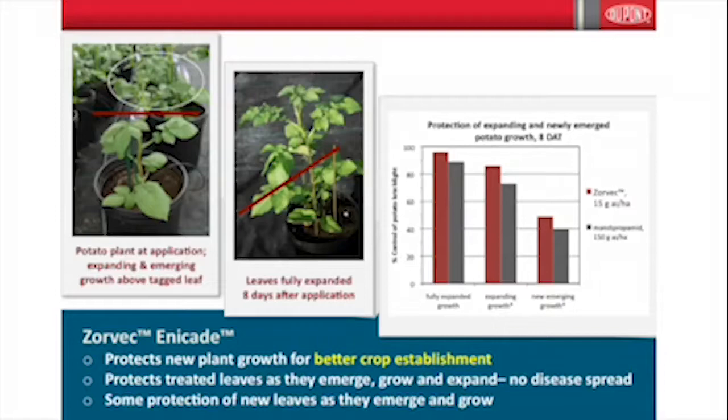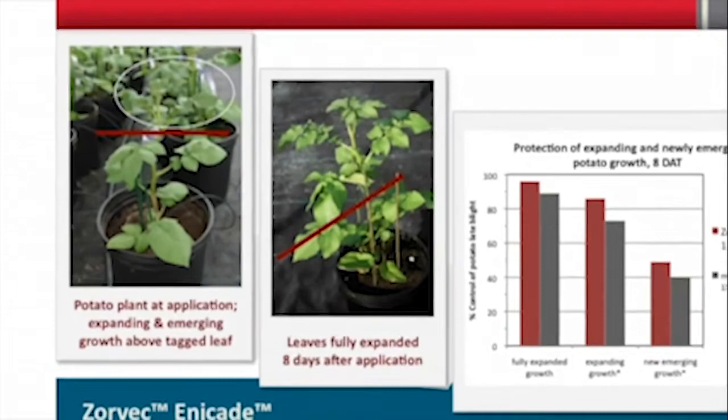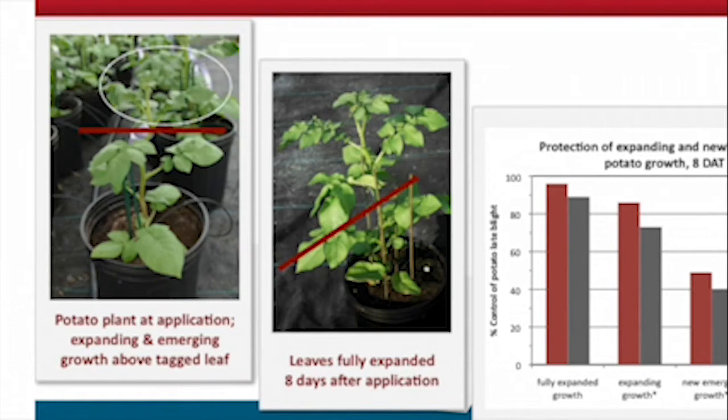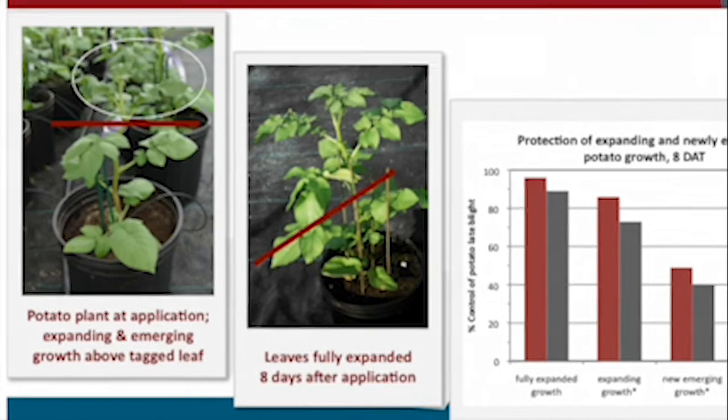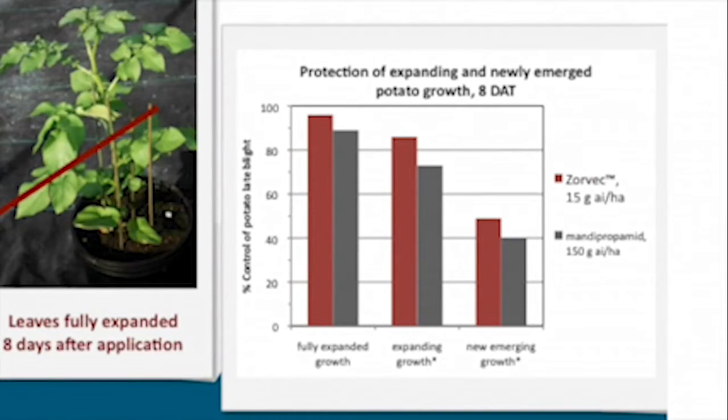This highlights the protection of new and expanding growth. A potato plant was sprayed and then phytophthora infection was measured after leaves had grown and expanded. The Zorvec Encade bar shows fully expanded growth had very good control of phytophthora, and leaves that weren't fully expanded at spray time but grew since spraying are also upwards of 80% protected.